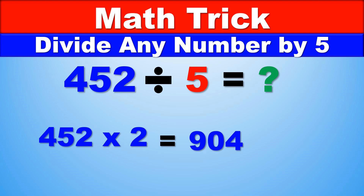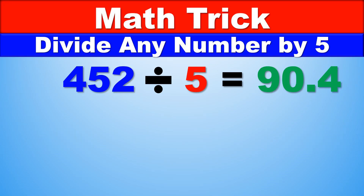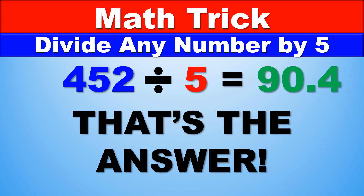And then the only thing we have to do is divide by 10. Or in other words, we can move the decimal one place back. So 904 becomes 90.4. And that is the answer — 452 divided by 5 is 90.4.